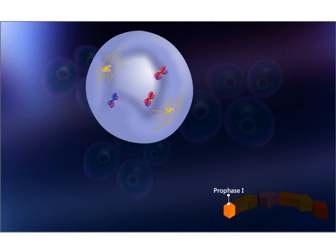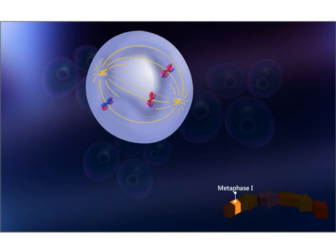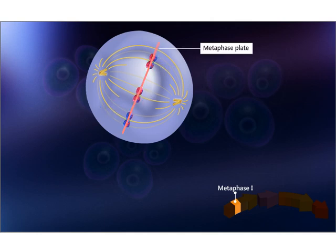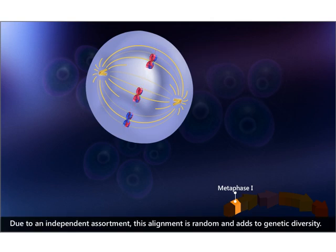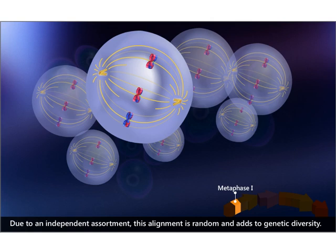As they move, the centrioles extend the spindle fibers forming the meiotic spindle. In metaphase one, spindle fibers are completely formed and the sister chromatids are attached to the spindle fibers. Then the bivalents randomly align along the metaphase plate. Due to independent assortment, this alignment is random and adds to genetic diversity.